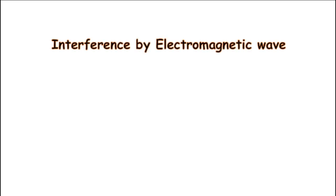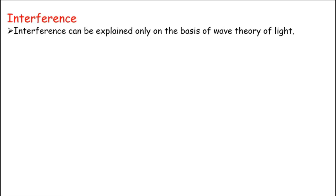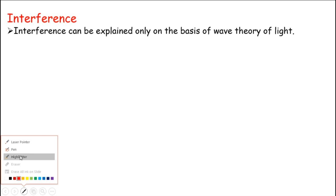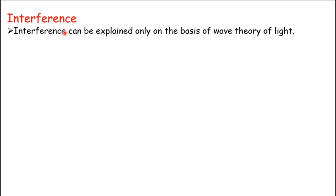Dear students, I am Dr. Nozat Gul and today we are going to discuss interference by electromagnetic waves. Interference can be explained on the basis of wave theory of light. We know that light has a dual character — sometimes it shows wave character, like in interference and diffraction, and sometimes it may show particle character. Today we will discuss the property of interference where the wave character of light plays its role.